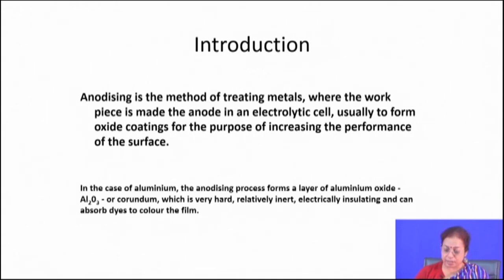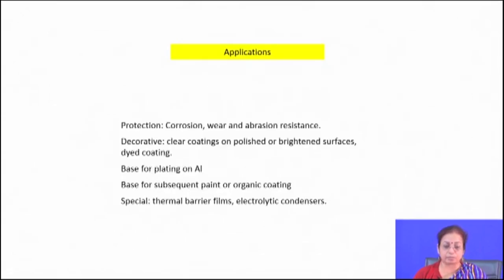The applications of anodized aluminum span several sectors: protection against corrosion, scratch resistance and abrasion resistance, decorative purposes, as a base for plating on aluminum, as a base for subsequent paint or special surface treatments like thermal barrier coating, and for electrolytic condensers.